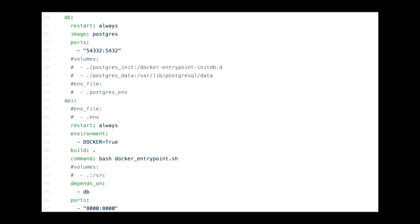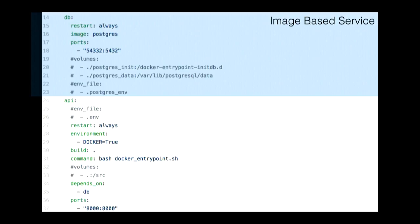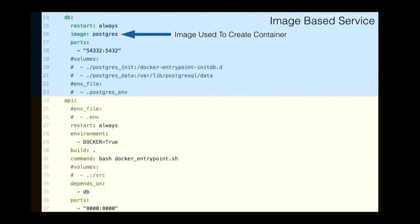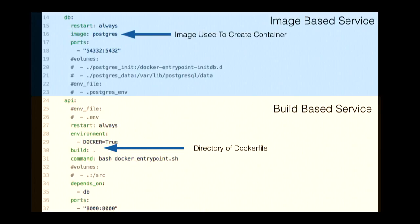We're looking at two different types of services. The first is an image-based service — we give it the name of an image, and we're telling it that our database container (aka DB) should pull the Postgres image from Docker Hub. Please don't skip tagging the version. Then we've got a build-based service, which means we want to build this service on the fly when Docker Compose spins it up. We give it a build directive — that little dot means our current working directory, which is where the Dockerfile is. And then we give it the command to run, because our image didn't specify any command.